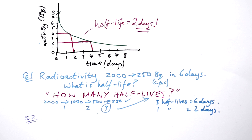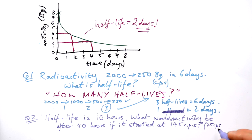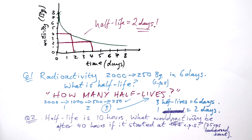Let's have a look at a similar question but flipped on its head. If you've got something that has a half-life of 10 hours, what would the activity be after 40 hours if it started at 145 counts per second? But 25 of that 145 is a background count. Whenever you have a background count, that means you're measuring radiation coming from other sources as well — maybe cosmic rays, maybe radon gas. All we need to know is that this isn't really 145; the actual activity of the source is 145 take away 25, which is 120.